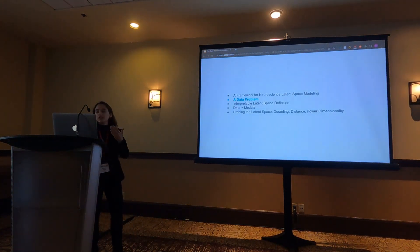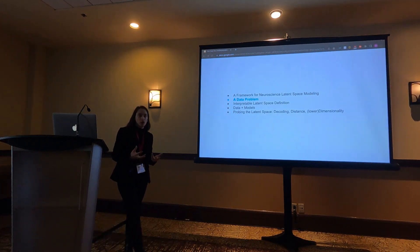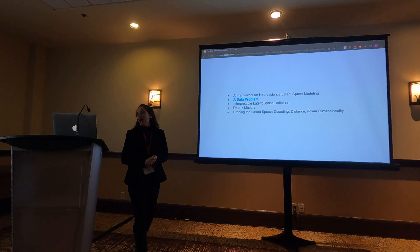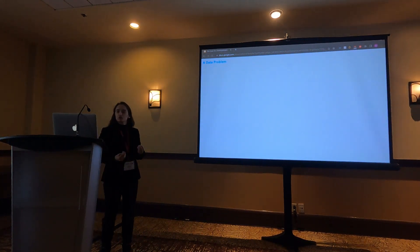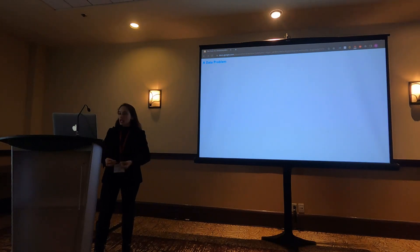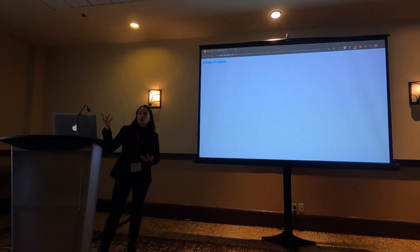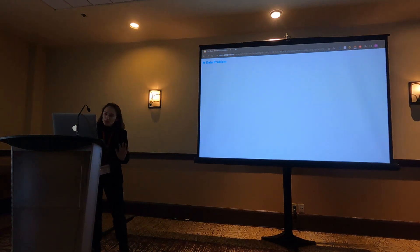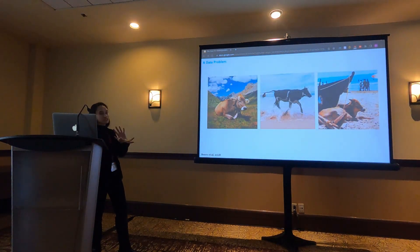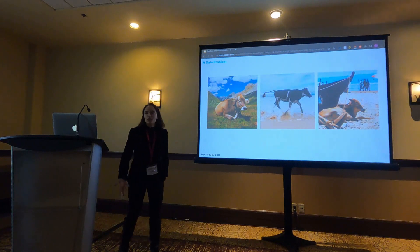Now we're going to move on to a problem with data — a really important component of creating behavioral latents. I'm going to borrow from another domain: vision. In deep learning, you can think about ground truth in several ways. A really popular one is label-based, meaning that somebody has gone through their dataset and annotated it. As many of you know, annotating a dataset is not an easy task — it takes a lot of time and is very painstaking. So I want to show you a set of images. What are these pictures?